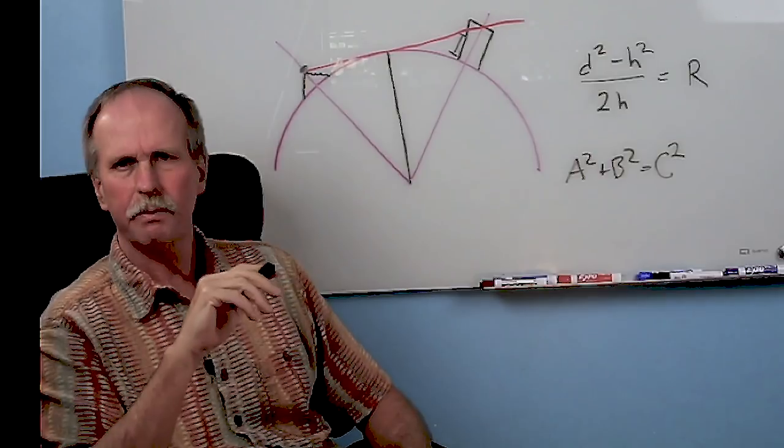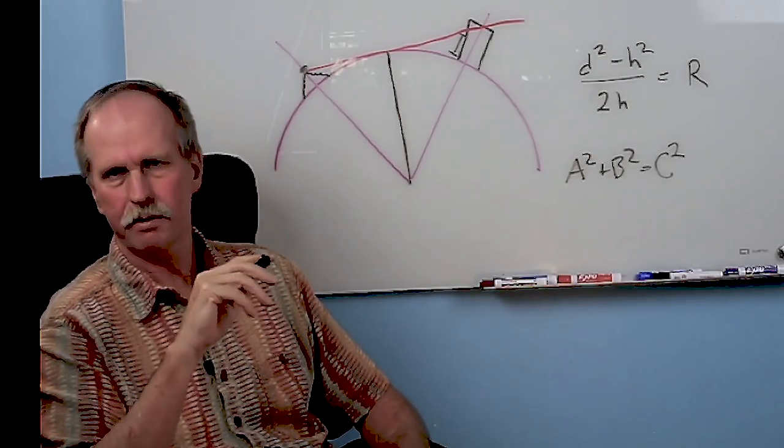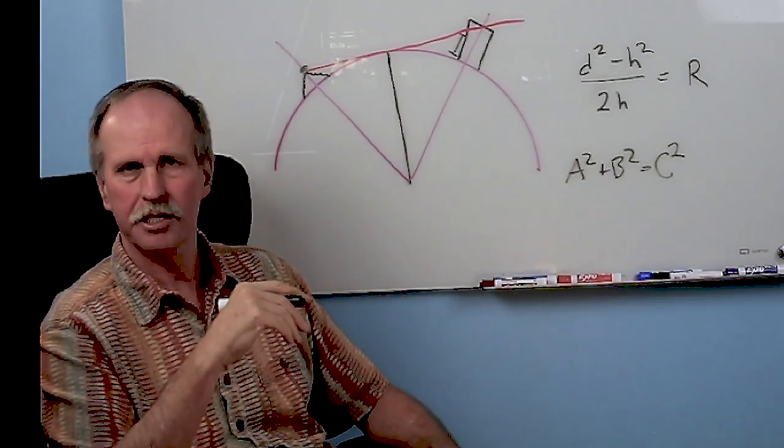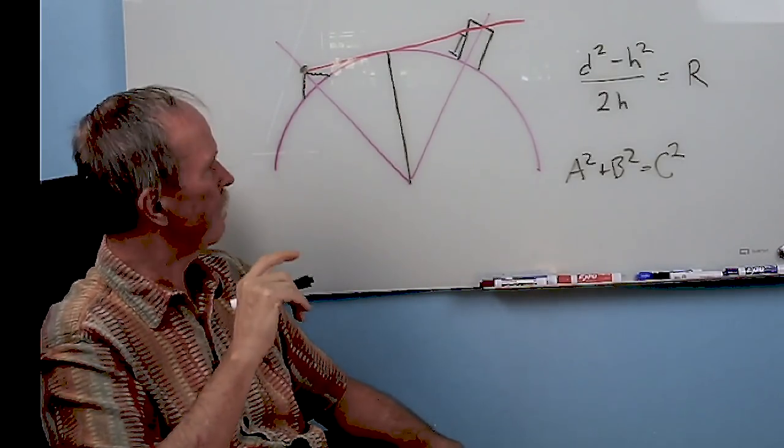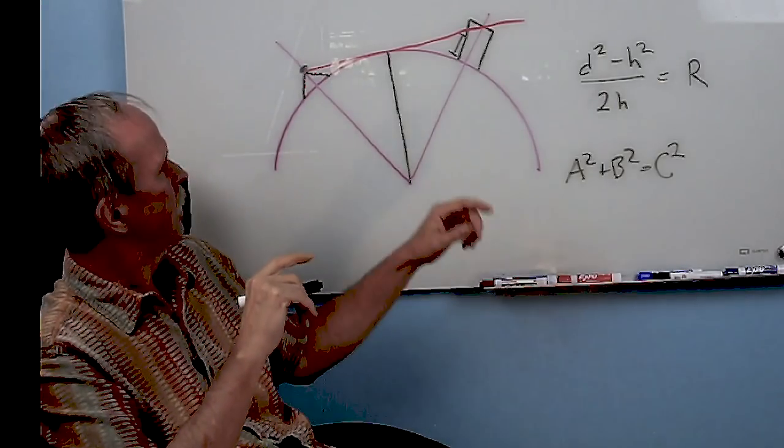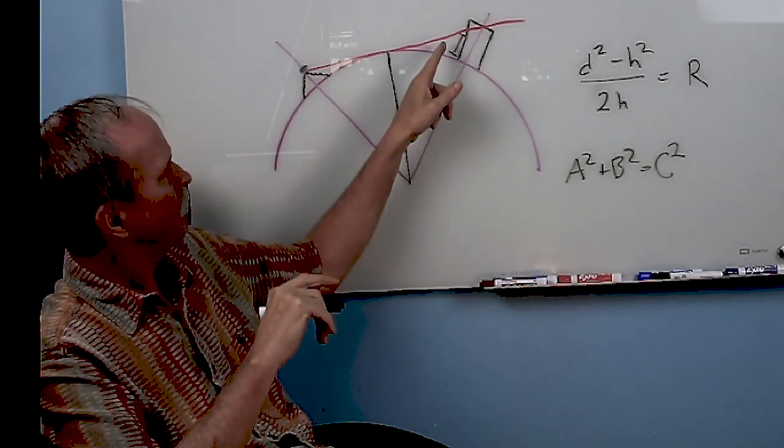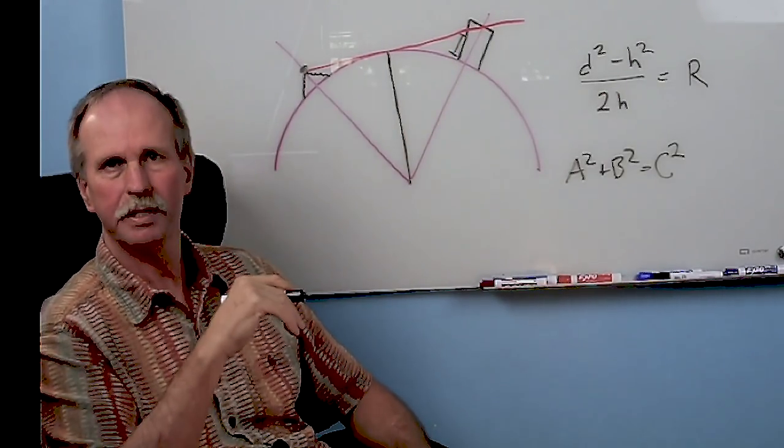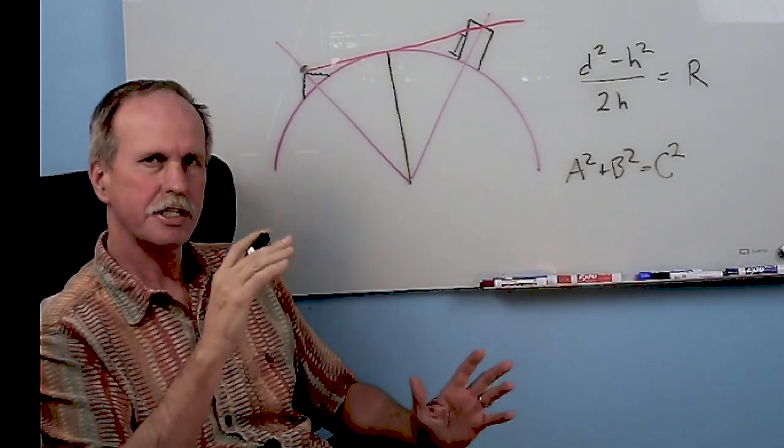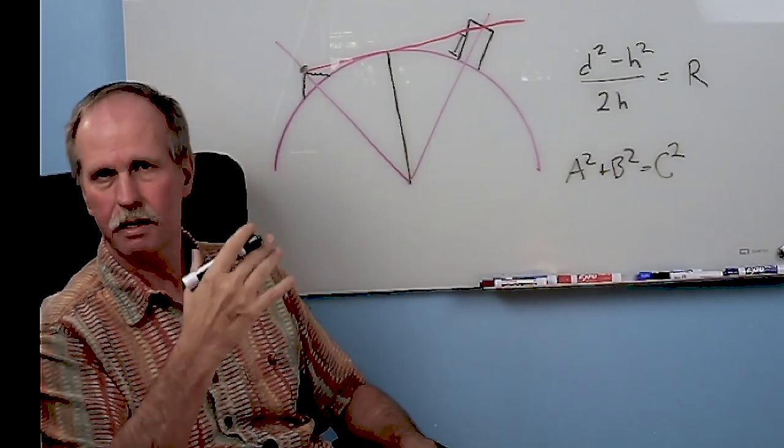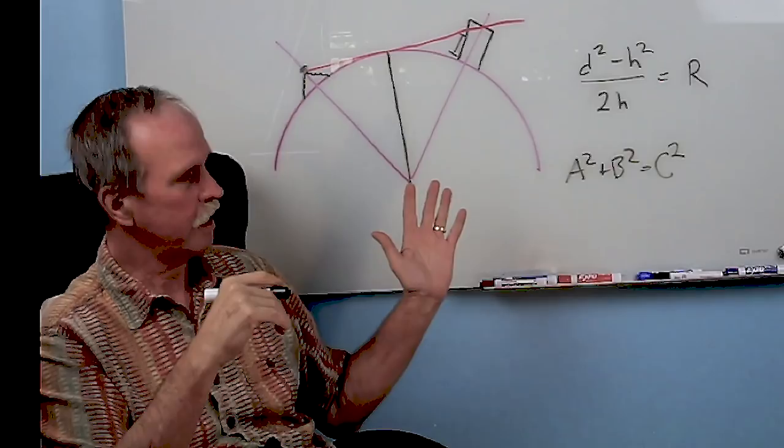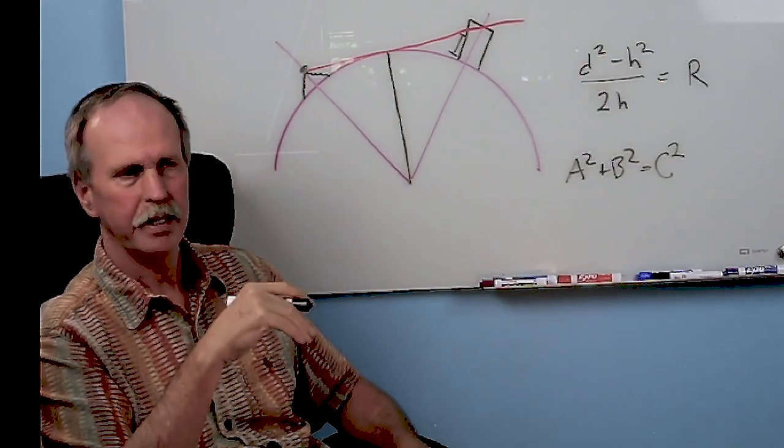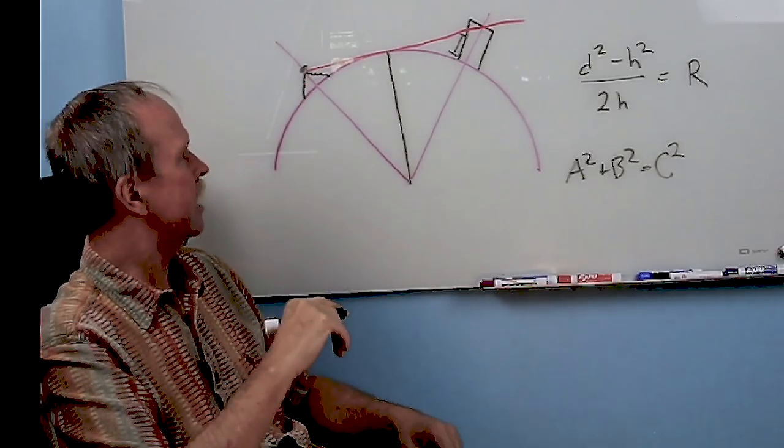Now, what I did with my math was that I took the curve calculator, which is the one you see online. Walter Bisland's is a good example. And what I wanted to do is I wanted to see whether or not I could determine the radius of the Earth based on the amount of an object in the distance over the horizon that was hidden from my view.